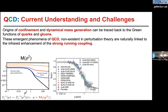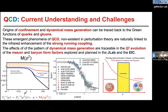These emergent phenomena of QCD, which are non-existent or cannot be seen in perturbation theory, are naturally linked to the infrared enhancement of the strong coupling. We saw a few examples in quantum electrodynamics and quantum chromodynamics — simple models in which when we go to couplings of order one, dynamical mass generation takes place. The problem of confinement is a lot more complicated, and one should look at it when coupling becomes large.